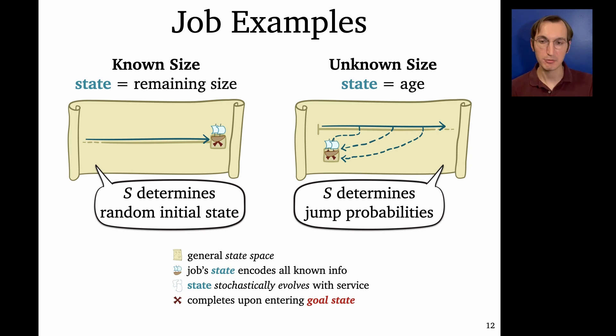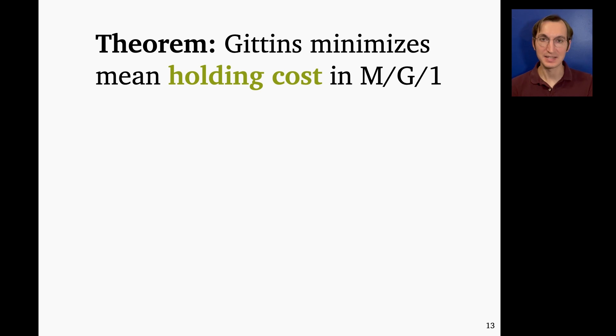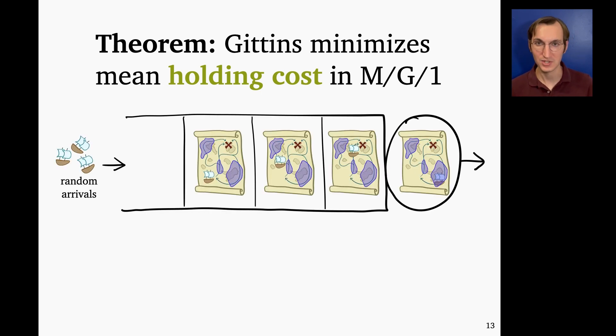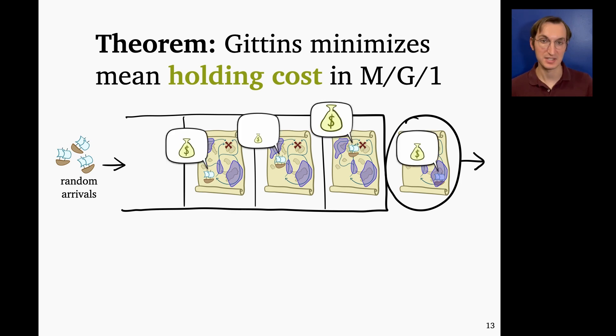Okay, and so the theorem we prove is that Gittins minimizes mean holding cost in the M/G/1 with this very general model of jobs. So that is, if I'm scheduling an M/G/1 where I've got all these Markov process jobs, each at any moment in time is in some state, each of those states has a different holding cost, Gittins minimizes the average total holding cost of all of the jobs over a very long period of time in steady state. And so that's our main theorem.